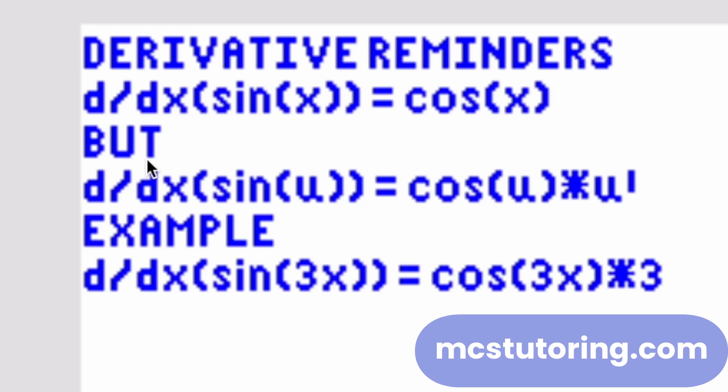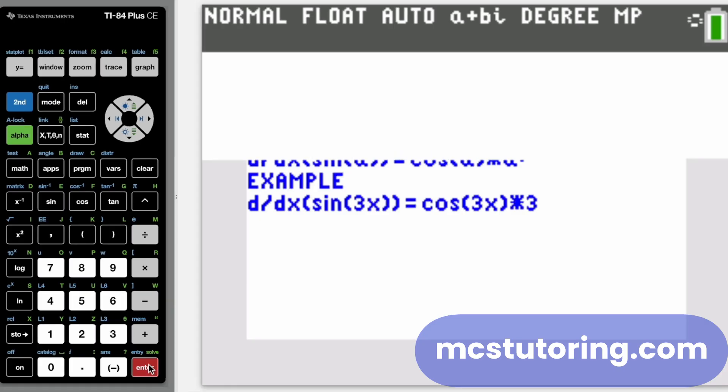So put this big old butt here. Big old butt. So look, derivative of sine U is cosine U times U prime. So an example of this, if you have the derivative of sine of three X, it's cosine of three X. Yes. But then times the derivative of this inside the parentheses like this three X. So derivative of three X is three. There you go. You're covered.